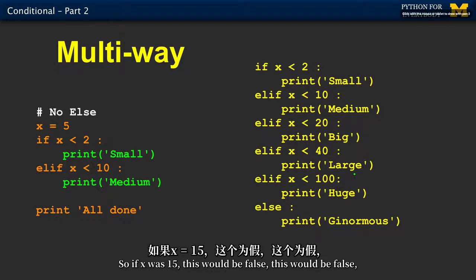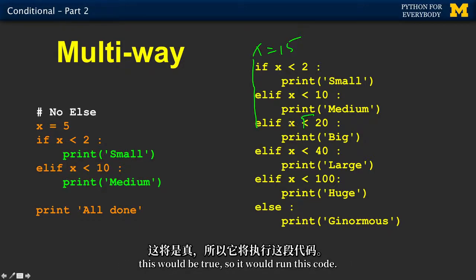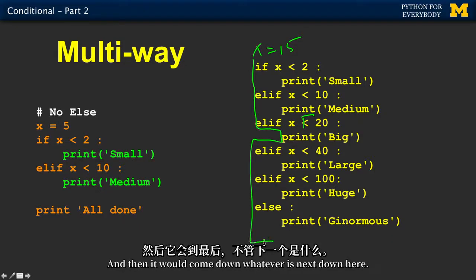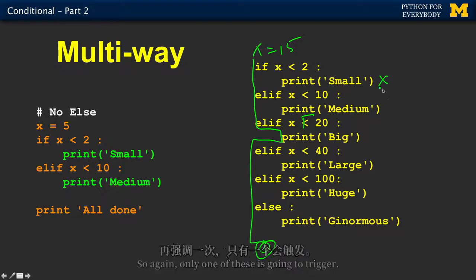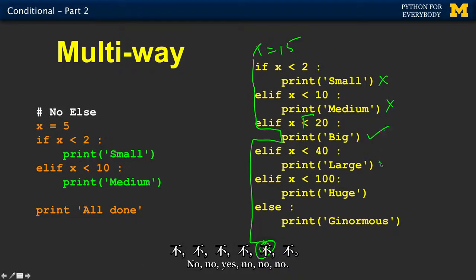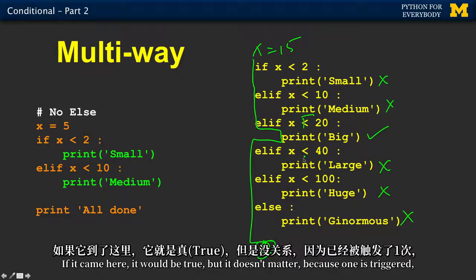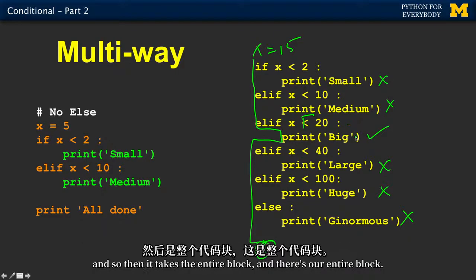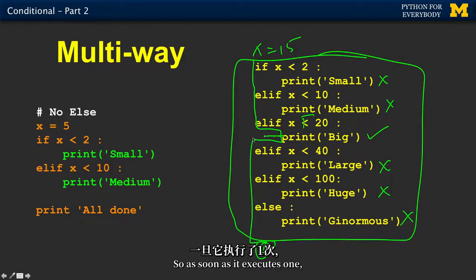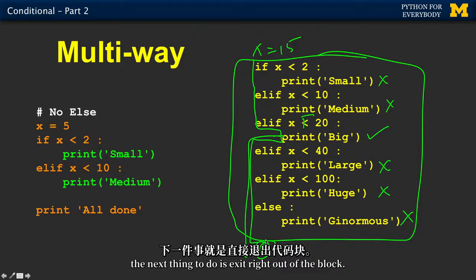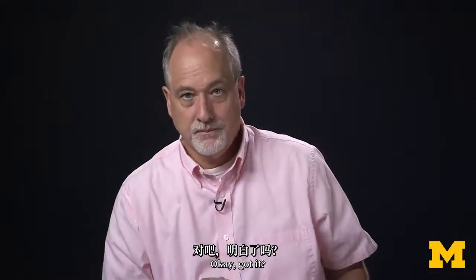So if x was 15, this would be false, this would be false, this would be true, so it would run this code, and then it would come down whatever's next down here. So again, only one of these is going to trigger. No, no, yes, no, no, no. I mean, 15 is indeed less than 40. If it came here, it would be true, but it doesn't matter because one has triggered, and so then it takes the entire block. So as soon as it executes one, the next thing to do is escape or exit right out of the block.